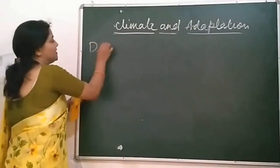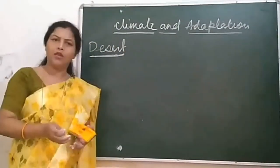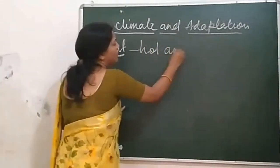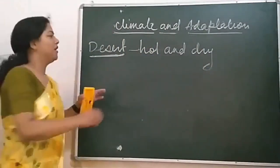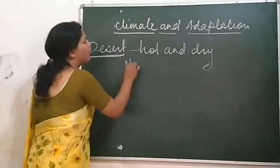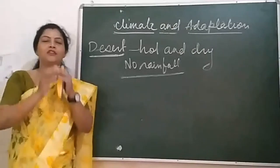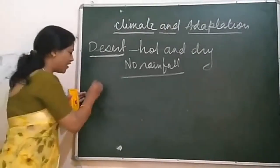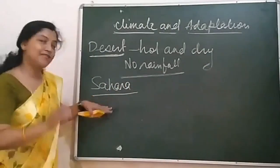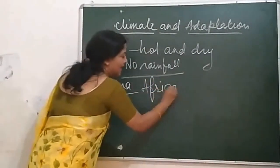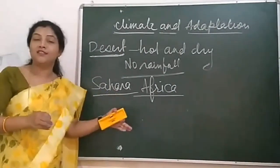The next part is desert. The climatic condition of deserts is completely hot and dry. The reason for this hot and dry climate is very less — or you can say no — rainfall. Very less rainfall is there in desert land. Have you ever heard about the Sahara Desert? The Sahara Desert is the largest desert of Africa, with very high temperatures.